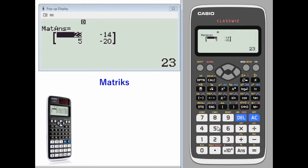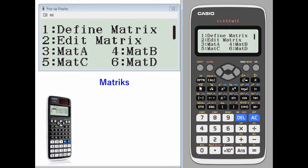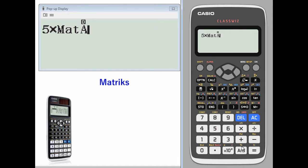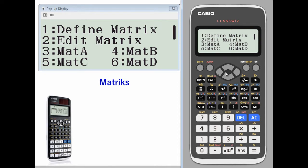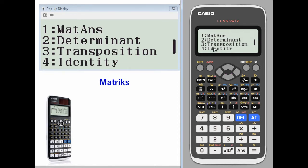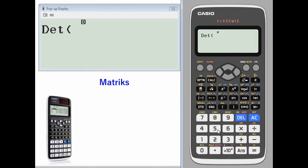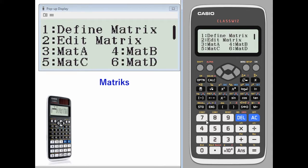We can also scalar multiply 5 times matrix A. Let's find the determinant of a matrix. Option, toggle down, number 2 for matrix A.